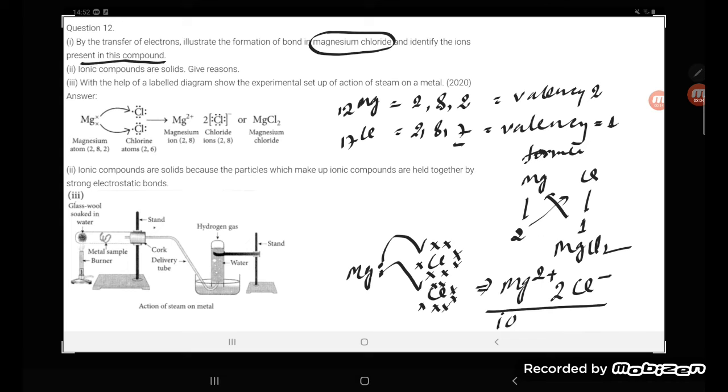So this is ionic bond. This is the ionic bond formation in magnesium chloride. By the transfer of electrons, we illustrate the formation of bond in magnesium chloride and identify the ions present in the compound.